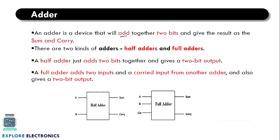An adder is a device that will add two inputs together. To add two binary values, we use an adder device. It gives the result as sum and carry. If we add any two values, we get the sum, and if this exceeds two bits we get a carry. By this method we can have two types of adders: one is the half adder and the other is the full adder.